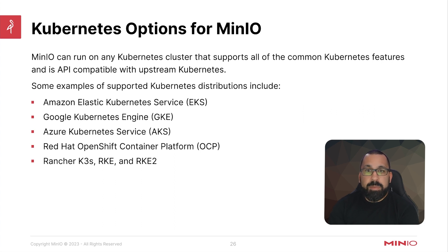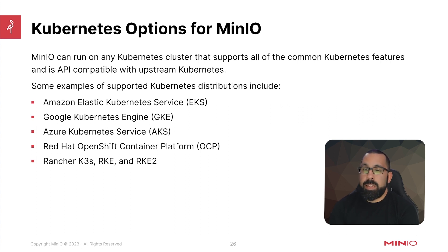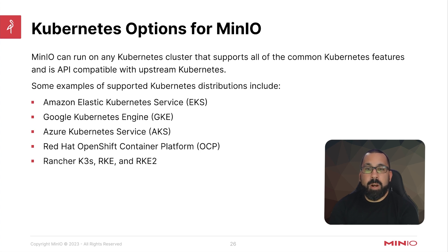Some examples of those distributions are Amazon EKS, Google GKE clusters, Azure Kubernetes Service or AKS. You could also run this on Red Hat OpenShift, although there are some unique things you'll want to pay attention to if you're running on OpenShift — make sure you check our documentation about that. You can also run this on something like Rancher K3S, RKE, or RKE2.